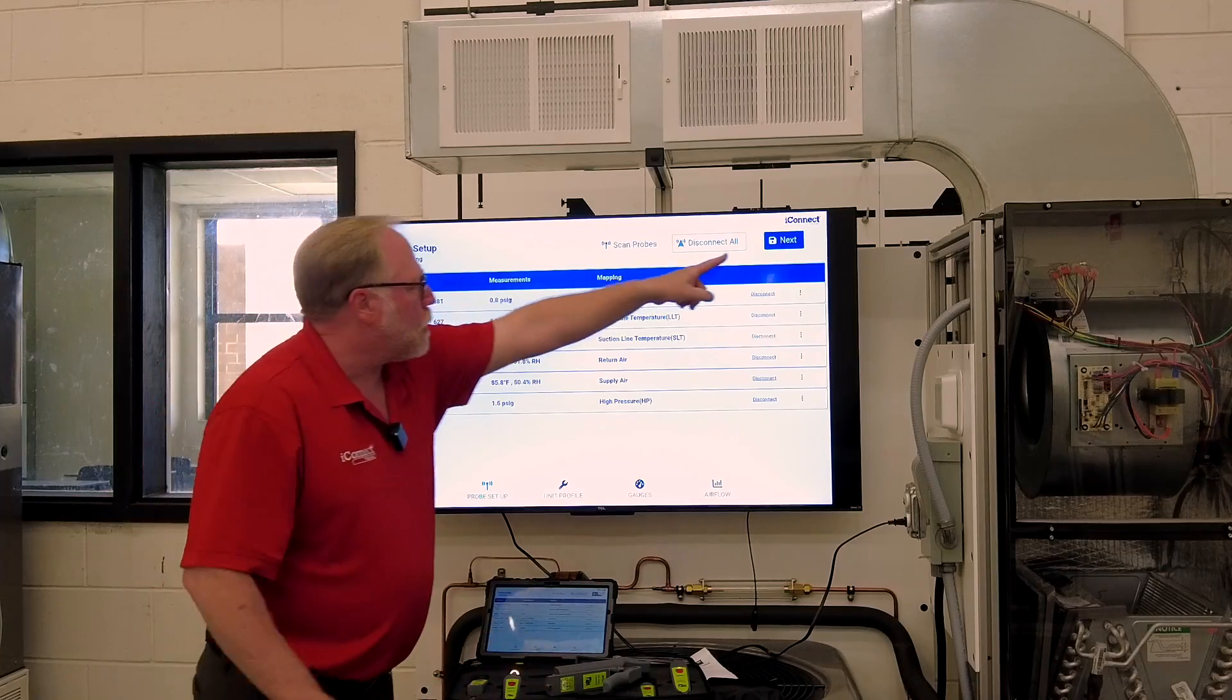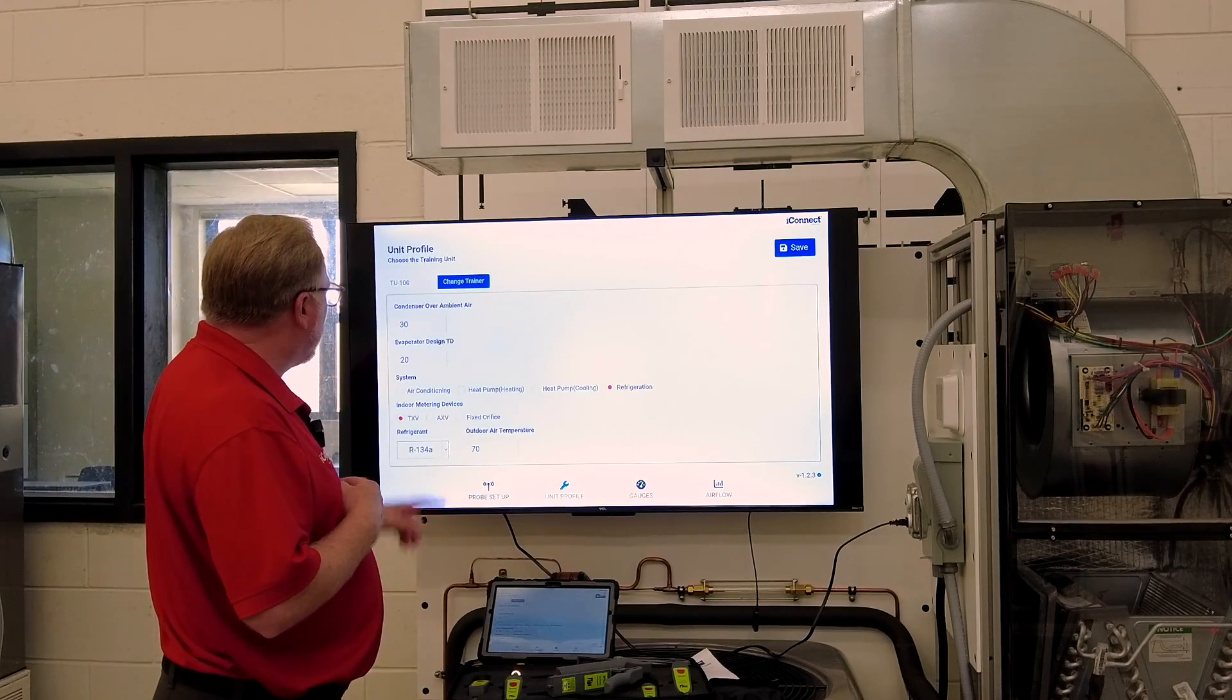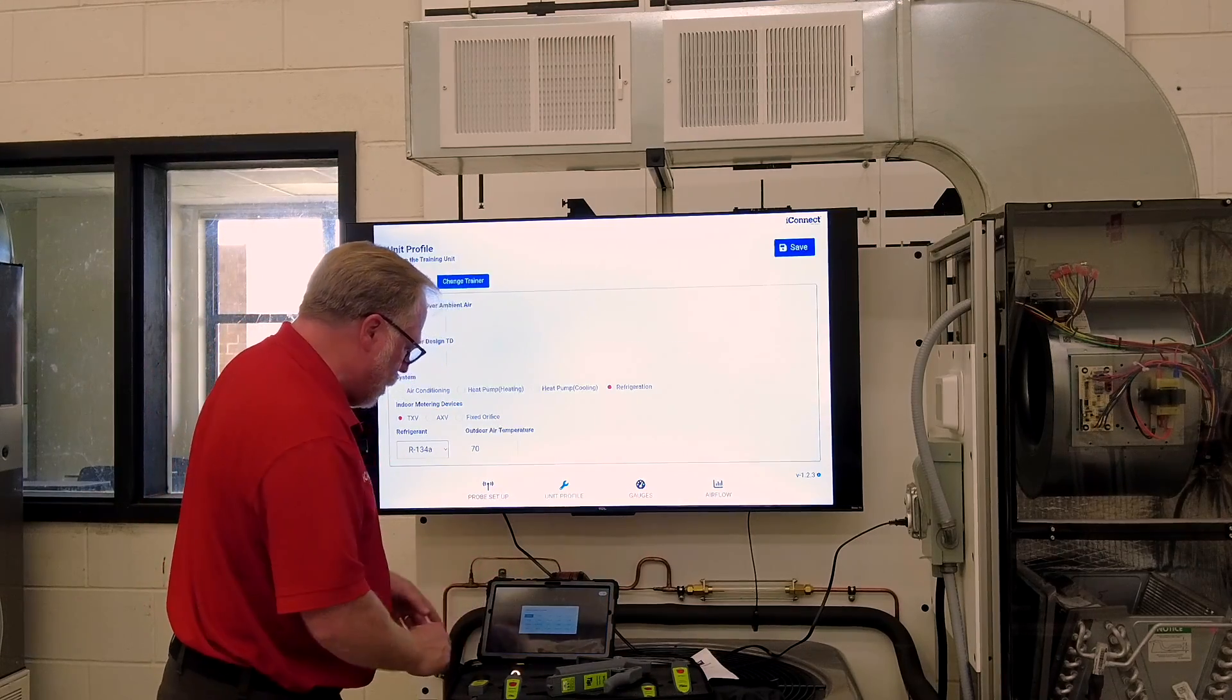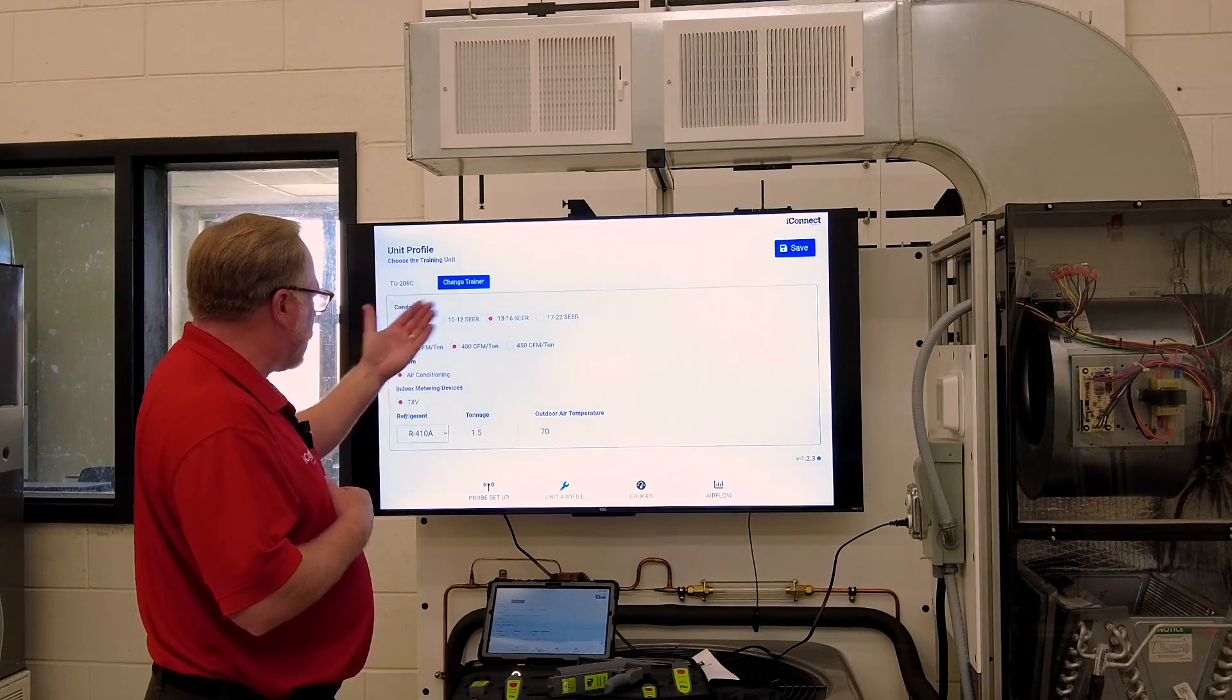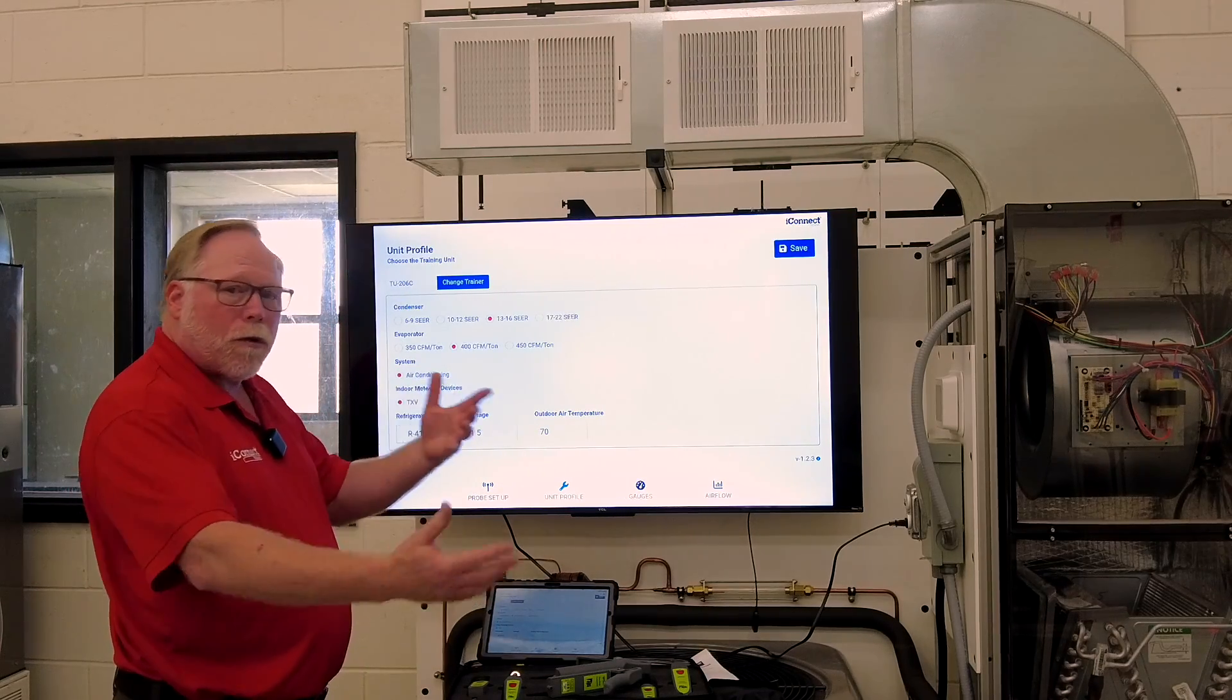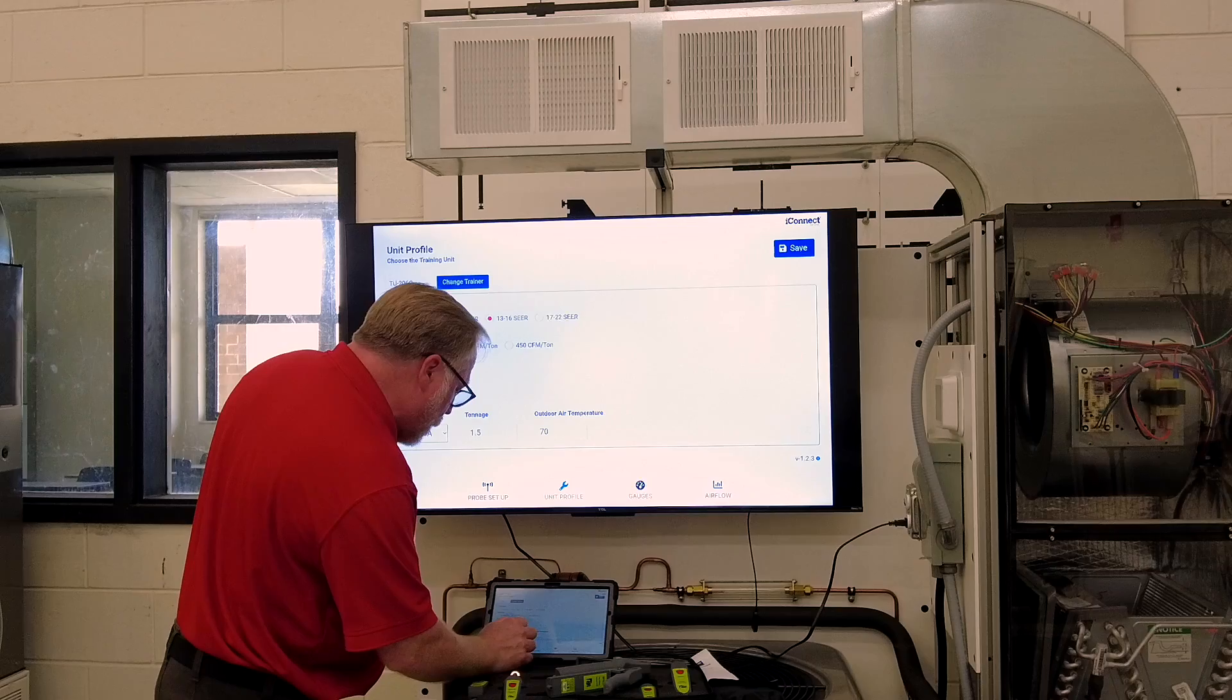Now, the last thing you want to do is hit next. Okay. And we want to choose what training unit we're on. This is the 206C. So I'm going to go change trainer. 206C. Now it's set up. It's got your profile of your equipment. The outdoor air temperature is the one you can change because we're in a lab and it depends on what temperature it is in the lab. This lab is pretty darn hot today.